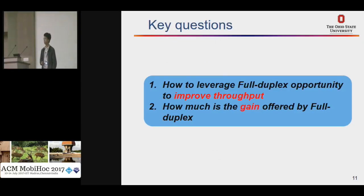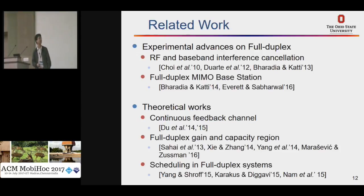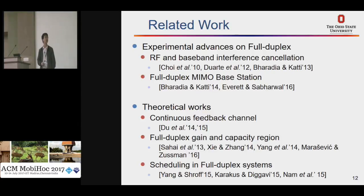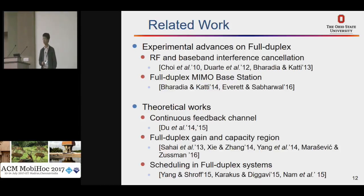Now we have two key questions. The first is: how to leverage the full-duplex opportunity to improve throughput? And the other is: how much gain is offered by full-duplex? I'll first talk about some related work. Prior work has designed several interference cancellation mechanisms to implement full-duplex, and researchers have also implemented full-duplex in multi-antenna micro base stations. There is also theoretical work on continuous feedback channels with ideas related to ours; however, those authors did not fully consider the interference caused here, and our purpose in this work is to solve the scheduling problem.